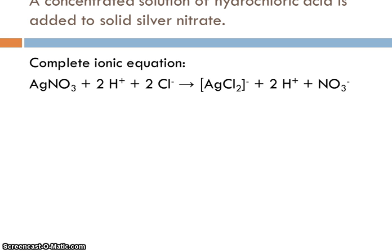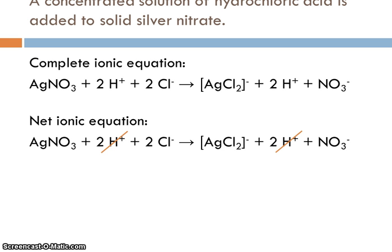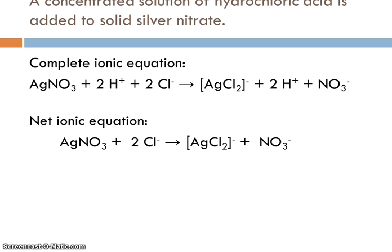So when I write my complete ionic equation, I have the silver nitrate as a solid. I need two chlorides, which means I have two H pluses. I'm going to form my complex ion, AgCl2 minus. Notice the square brackets, the charges outside. And that's because, again, the silver has a charge of plus one. Each chloride has a charge of minus one. It gives me an overall charge of minus one for the complex ion. I had some nitrates. I had my H pluses. So that would be my complete ionic equation. The net ionic equation, really, the H plus ions are a spectator here. So I can eliminate them. The nitrate was part of that solid silver nitrate originally. So I can't eliminate that. And I'm left with this being my net ionic equation.